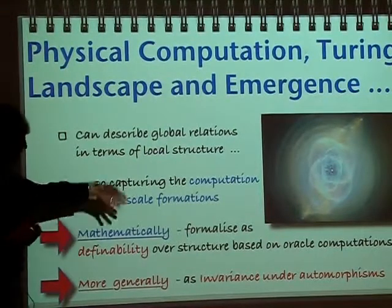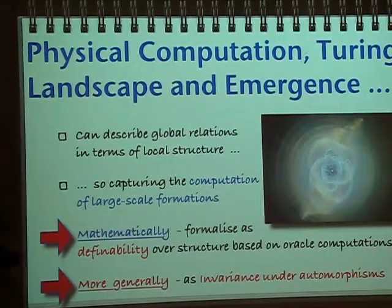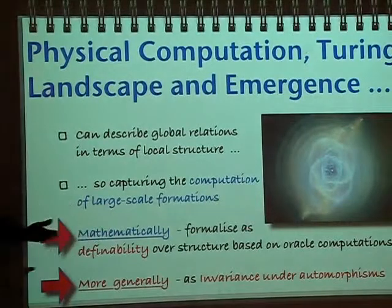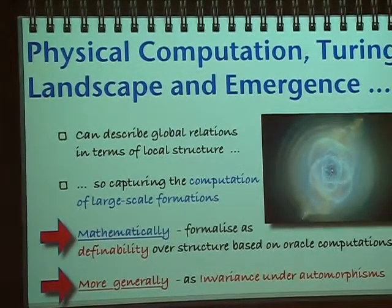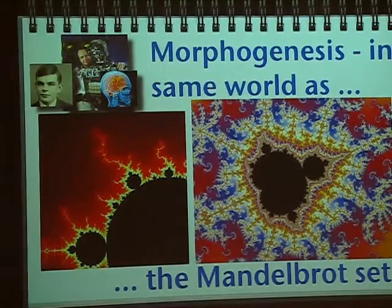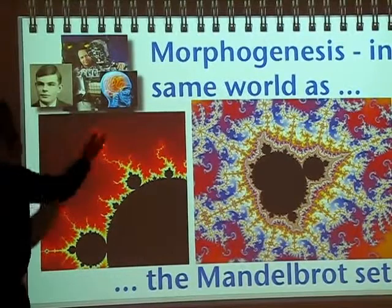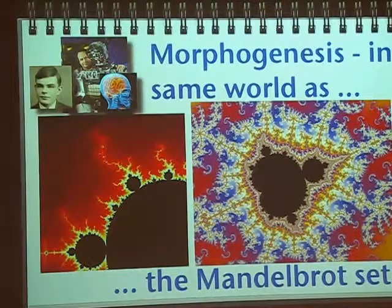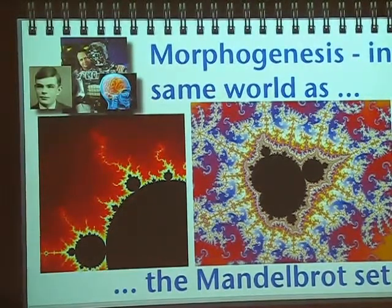There's an underlying model — this oracle-type picture — which gives you a mathematical structure, and you can talk about mathematical definability in that, which is the formal counterpart of being able to describe things. What we've got coming out of Turing's way of thinking about things is a lot of different contexts which seem to get some kind of meaning from his work.